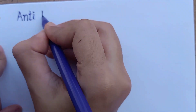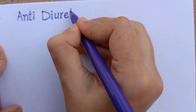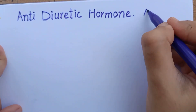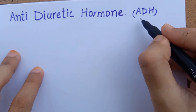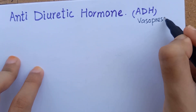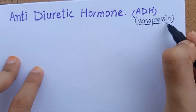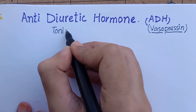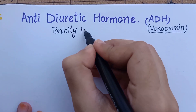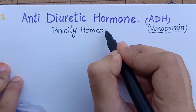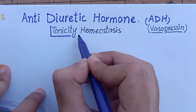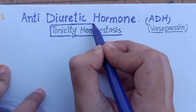In both diabetes insipidus and syndrome of inappropriate anti-diuretic hormone, there is involvement of the hormone known as anti-diuretic hormone, ADH, also known as vasopressin. ADH is the primary hormone responsible for tonicity homeostasis, which means maintaining a stable state of the internal environment with respect to water and fluid balance.